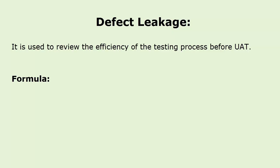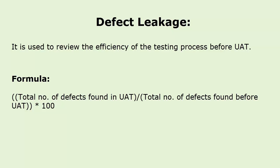Defect leakage: the formula involves total number of defects found in UAT divided by total number of defects found in UAT plus total number of defects found earlier, multiplied by 100. Here goes an example on defect leakage matrix.